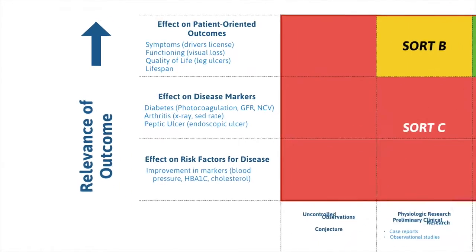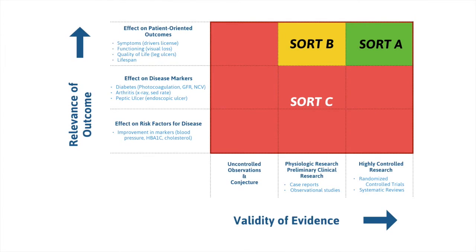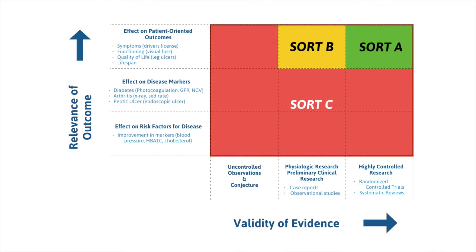SORT C evidence can be either low validity or low relevance. SORT B information, or Strength of Recommendation Taxonomy B, is information that's relevant in the sense that it's patient-oriented, but it's not necessarily based on high-quality research.